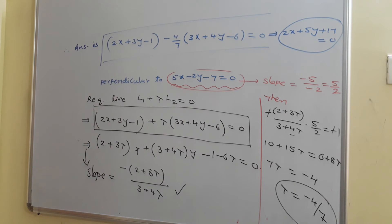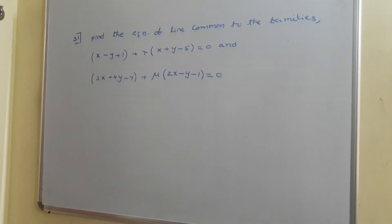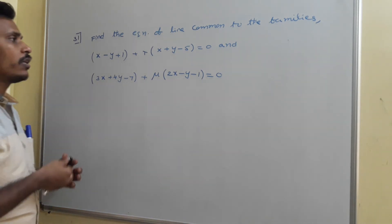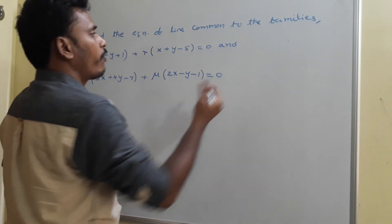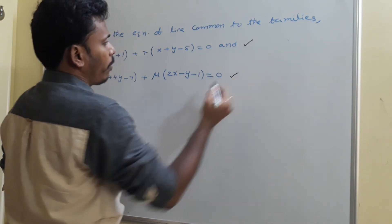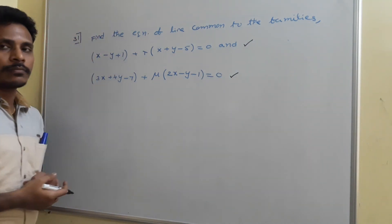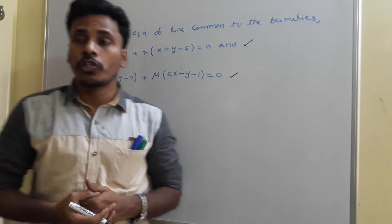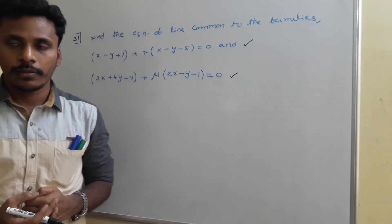On simplification, the answer for the problem is 2x plus 5y plus 17 equals 0. Now look at the board — we need to find the equation of a line which is common to two families.